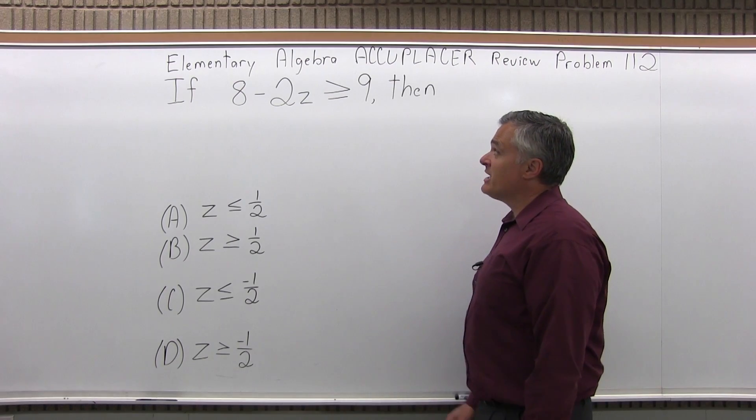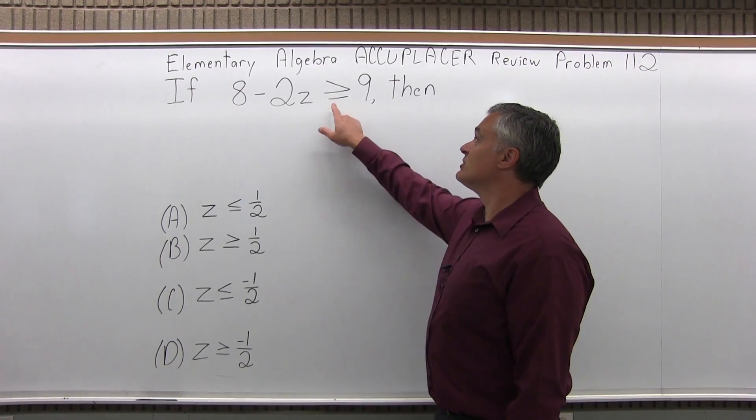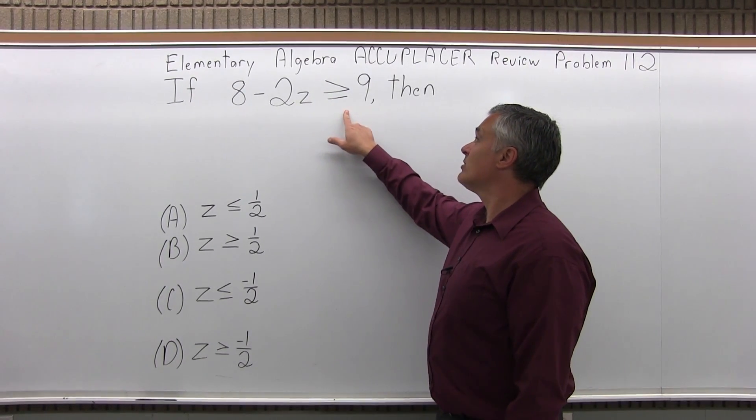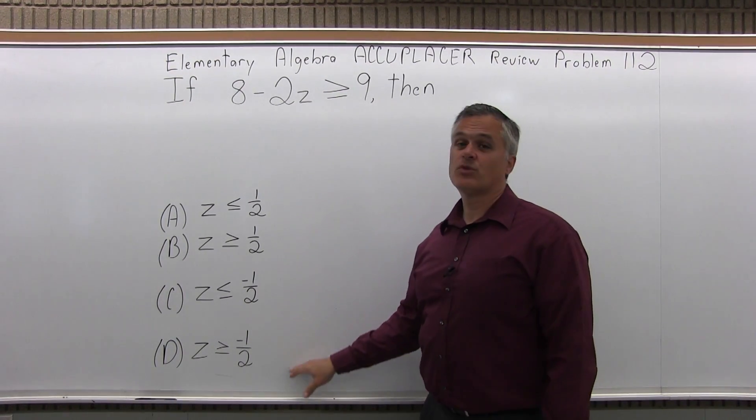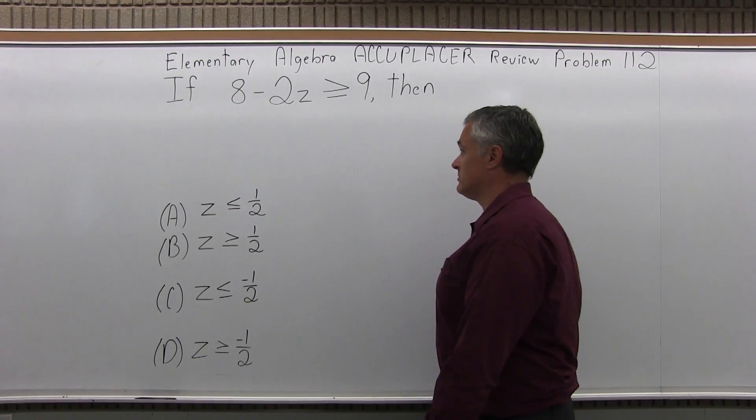It says if 8 minus 2z is greater than or equal to 9, then which one of the following four instances is true?